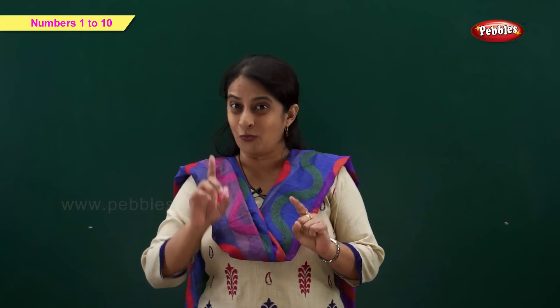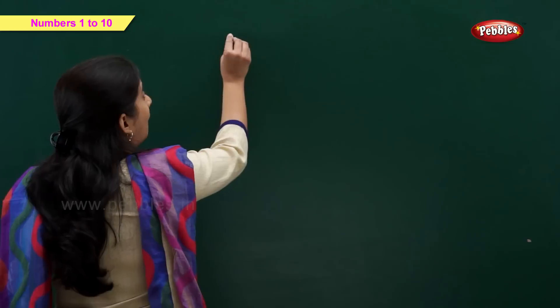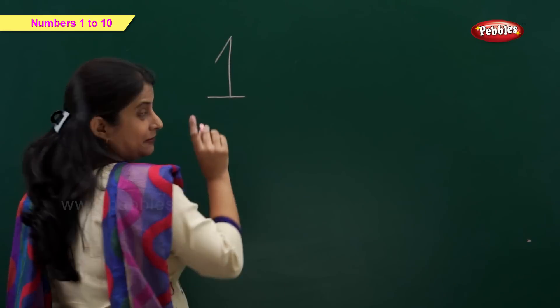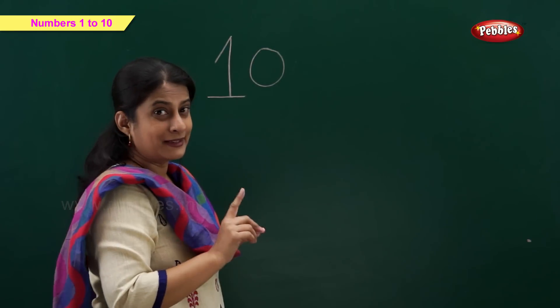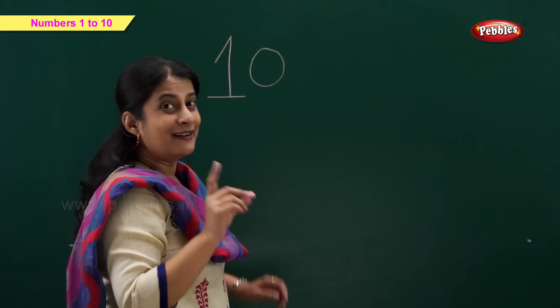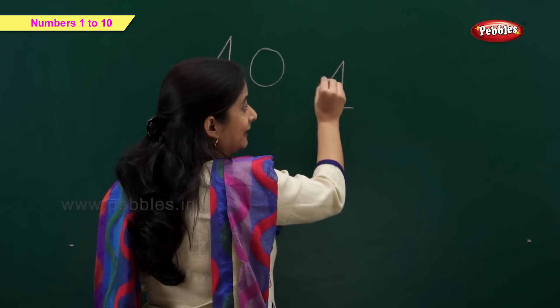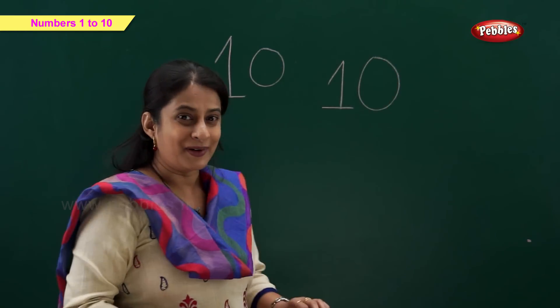And now we'll write number 10. You are correct — we need number 1 and a 0, that makes number 10. One standing line, one sleeping line, one slanting line makes number 1. And a 0 makes number 10.